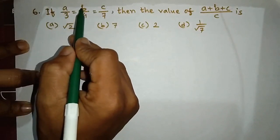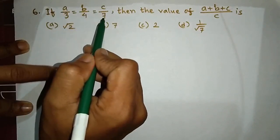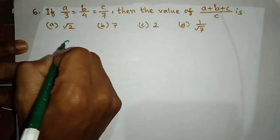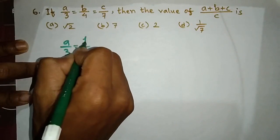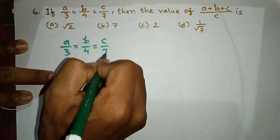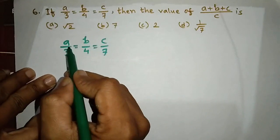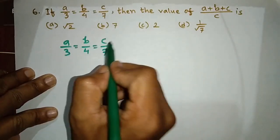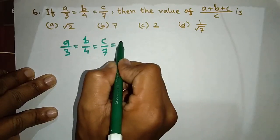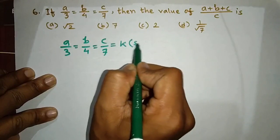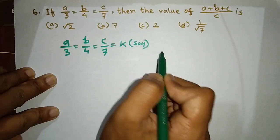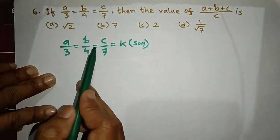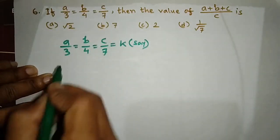Next problem: if A by 3 equals B by 4 equals C by 7, then find the value of A plus B plus C divided by C. So we have A by 3, B by 4, and C by 7 — all equal to each other.